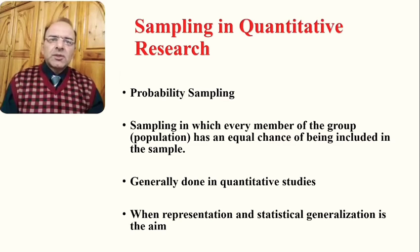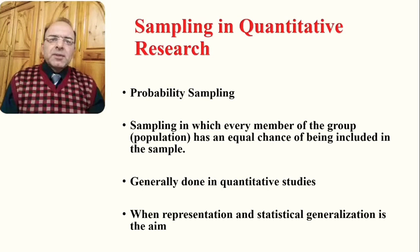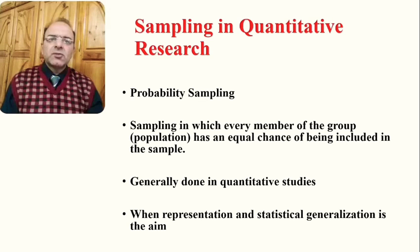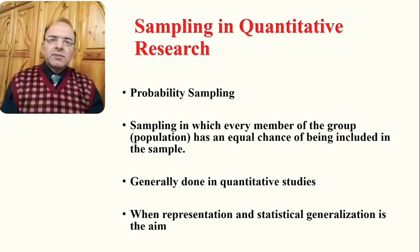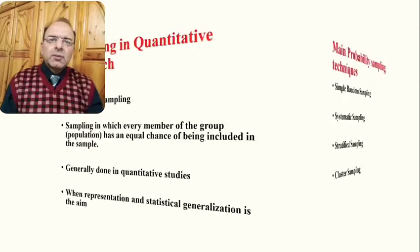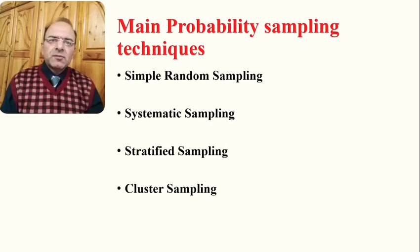Generally in quantitative survey researches, probability sampling is used. This is a sampling technique in which every member of the population has an equal chance of being included in the sample. It is generally used in quantitative survey studies where representation and statistical generalization is the aim of the research.